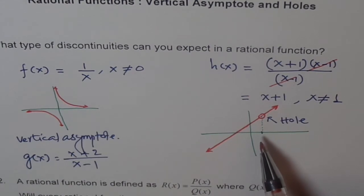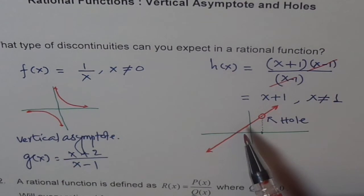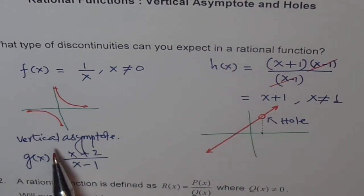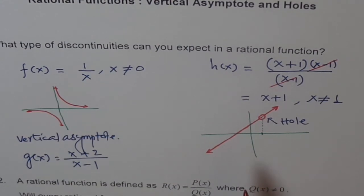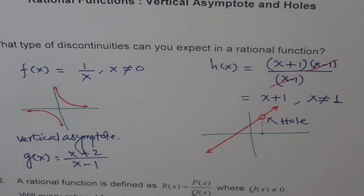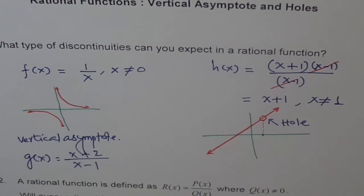So there are two types of discontinuities we can expect in a rational function: one is a vertical asymptote, and the other is a hole. You get a hole when the denominator is zero but there is a matching factor in the numerator that cancels out — so the vertical asymptote we were expecting is not there, but a hole is there instead.